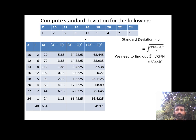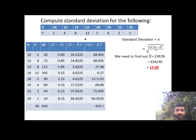634 divided by 40 gives us 15.85 as the answer — this is the arithmetic mean x-bar. So x minus x-bar means x minus 15.85. The arithmetic mean we have obtained is 15.85.